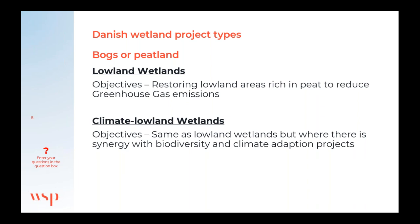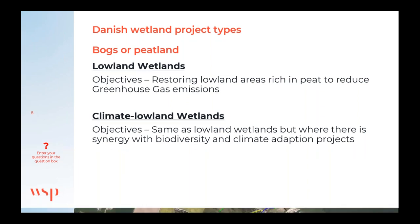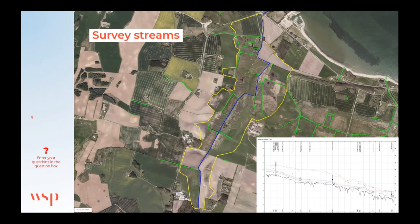To show a typical wetland restoration project, I'll go through the steps and services WSP provides to clients. One of the first things we do is survey the streams and ditches every 100 meters using a GPS or total station, giving us data on the stream channel and tributaries. The stream flows from south to north, with the project area indicated by a yellow polygon. On the right is a longitudinal profile showing elevations for the stream bed, water elevation, all tributaries, and drains present at the time of surveying.